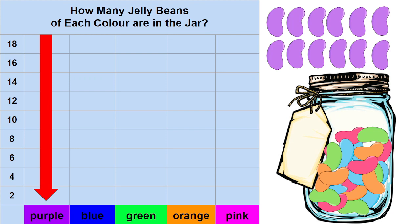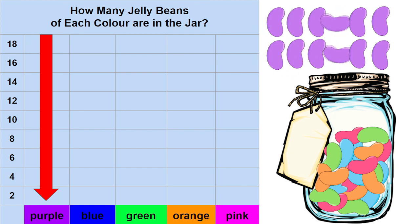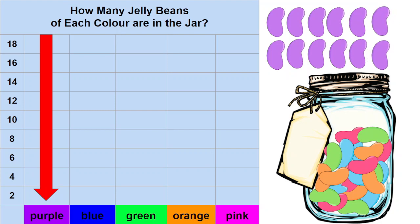Count them with me and we're going to count them by 2: 2, 4, 6, 8, 10, 12. We have 12 jelly beans. I just found the number 12 on our graph. We're going to fill in the purple section all the way up to 12.